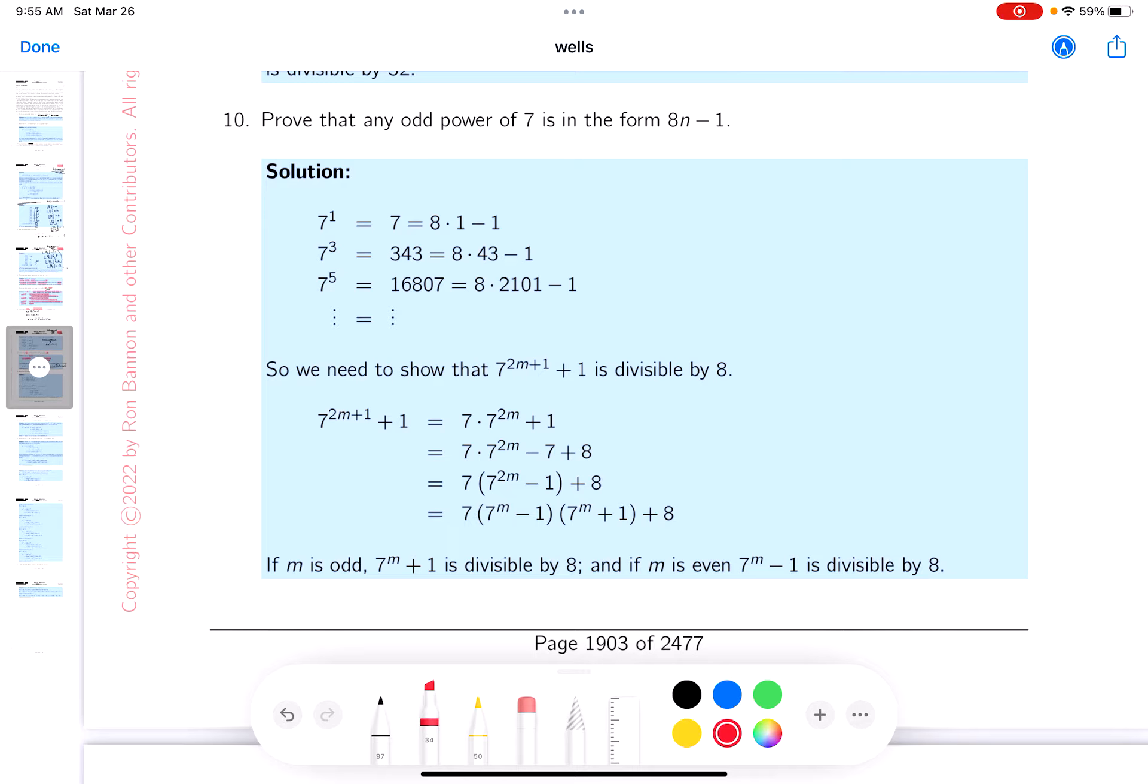Okay, number 10, proof that the odd powers of 7 is of this form, and I see it's 8n minus 1.